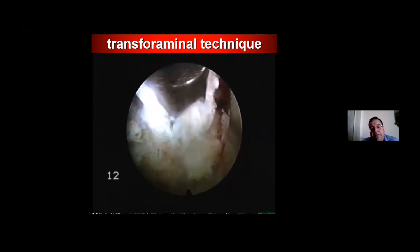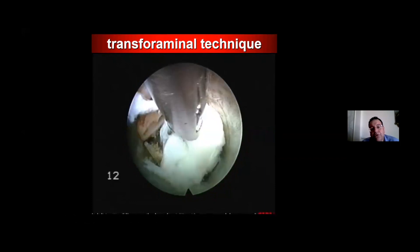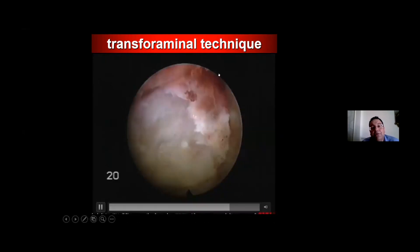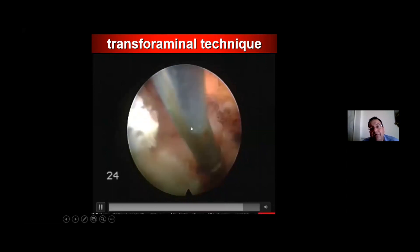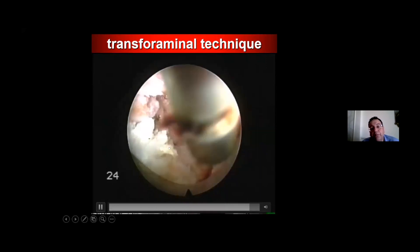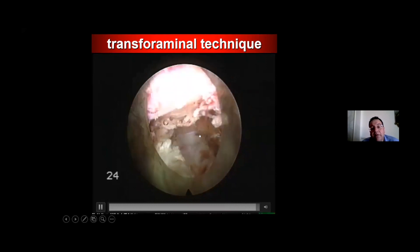It is useful to rotate while taking the fragment out to ensure complete removal. Pulsation of the ventral epidural space is a very important sign that decompression is complete. We can also check with the Trigger Flex and confirm that we have fully decompressed the disc.